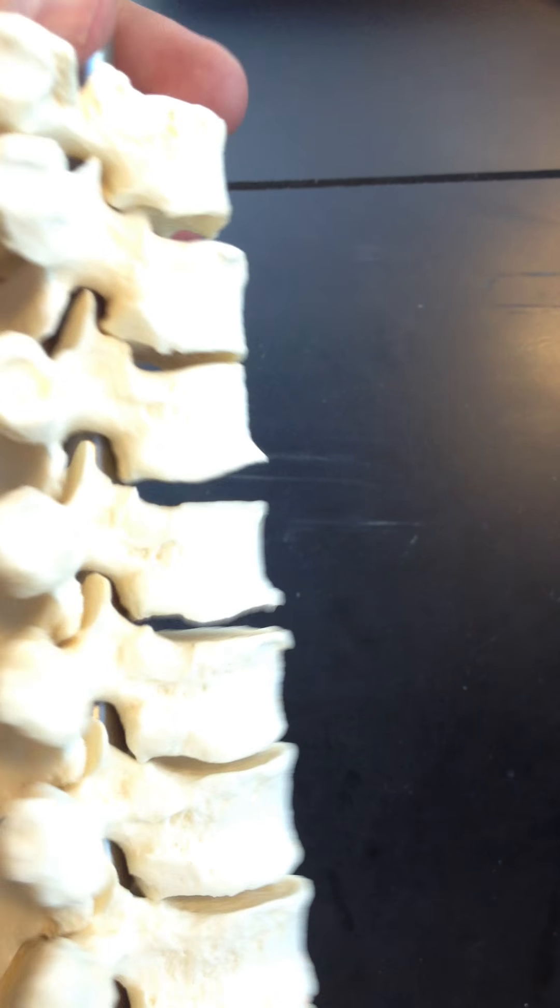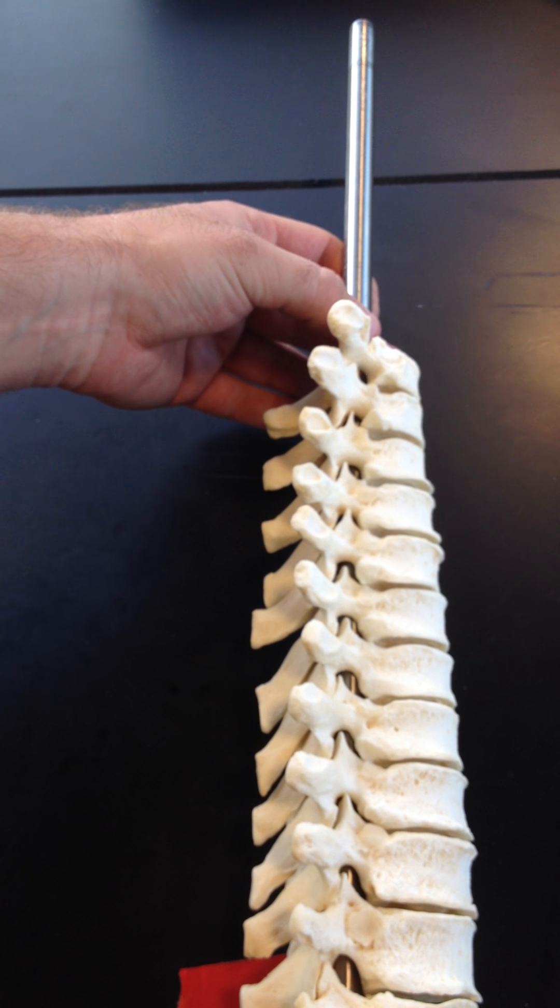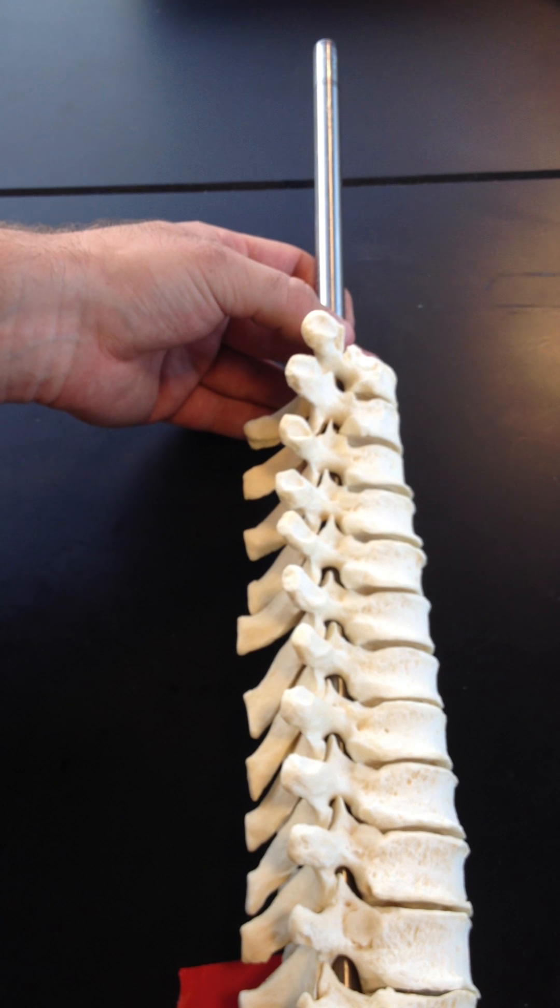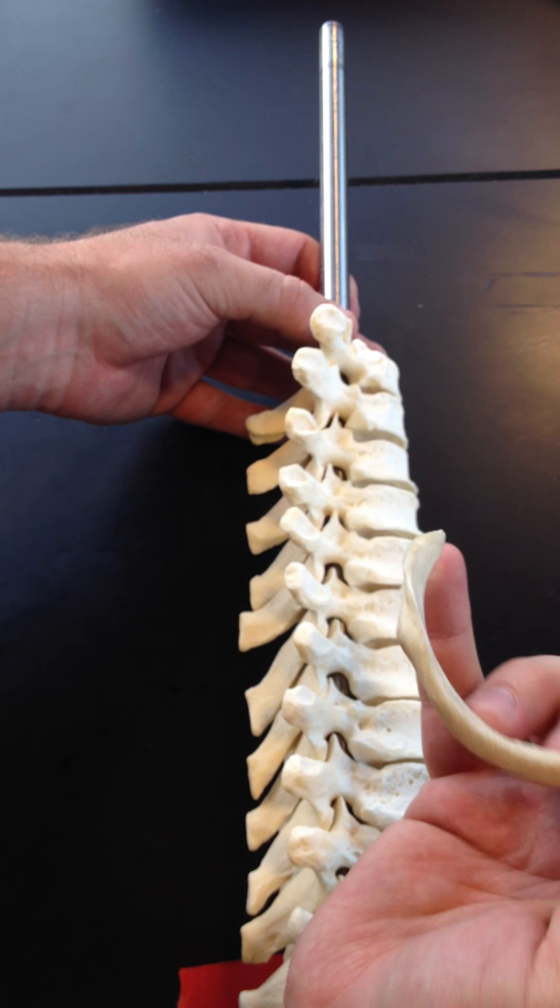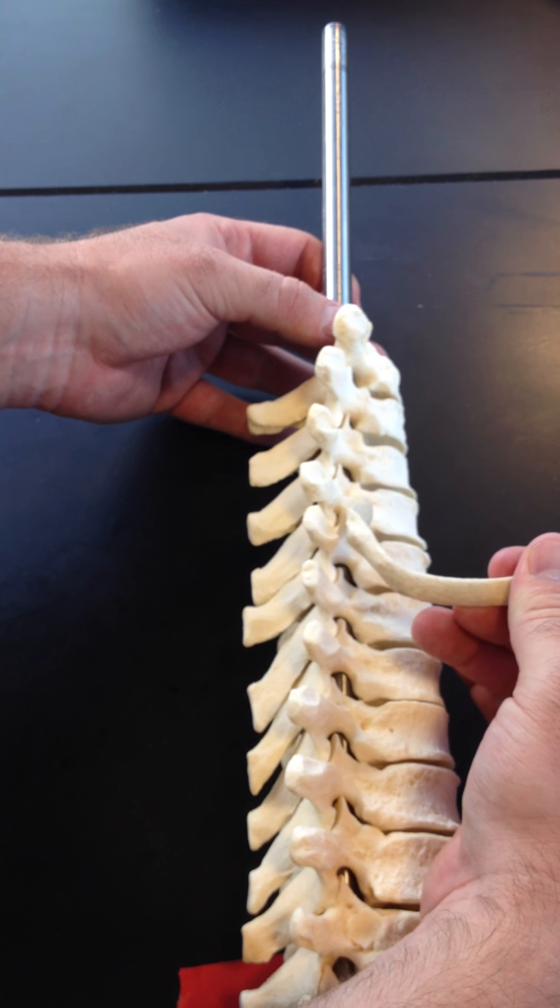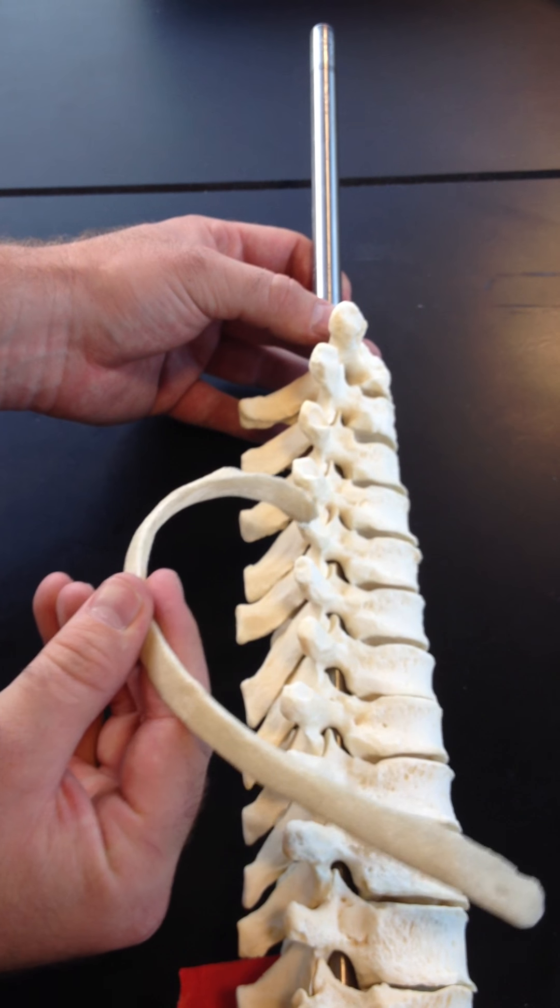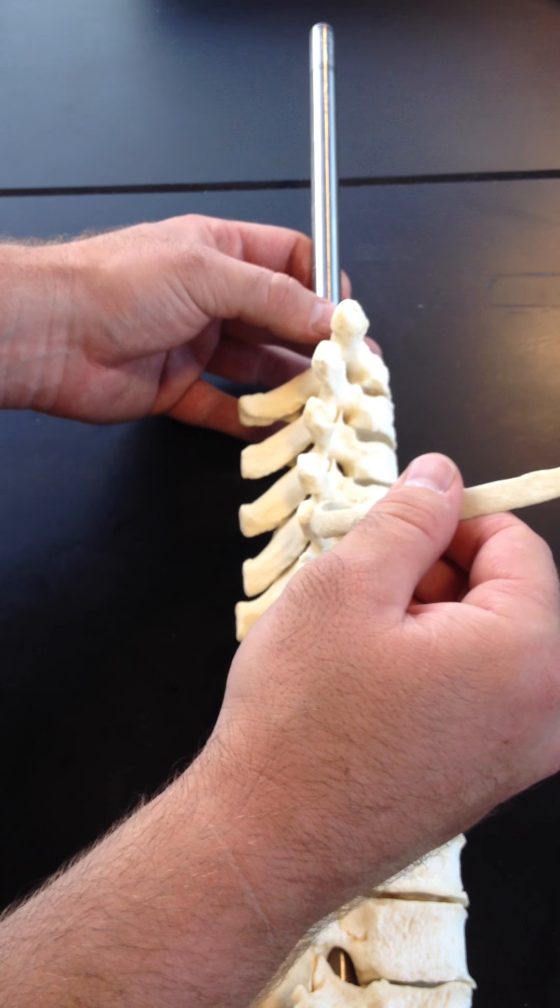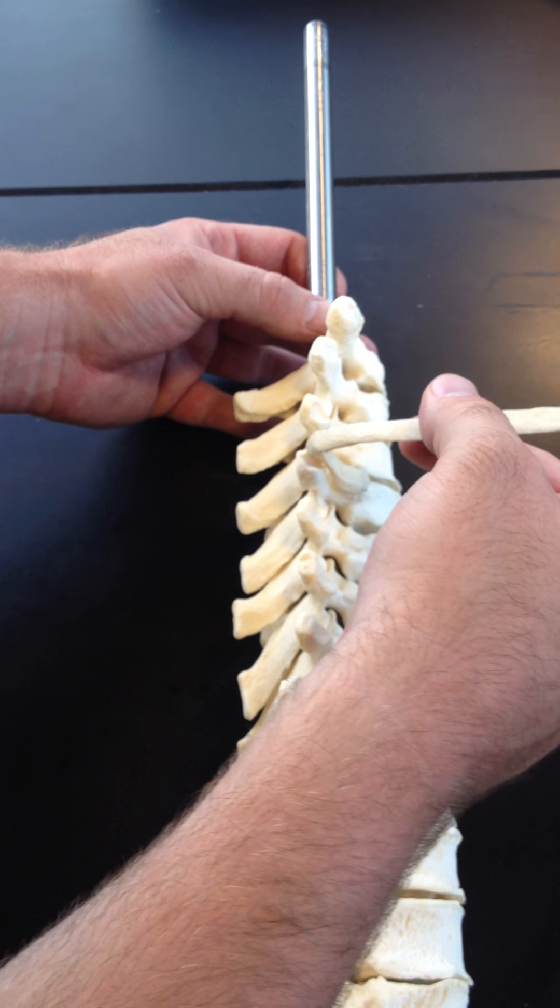All right, so we'll show you the whole thoracic region now. And we can see how a rib would come in, the head of the rib, right here, would articulate with an inferior demifacet and a superior demifacet. And then it would come across and it would touch the transverse costal facet like this. So that's how a rib would articulate in these cases.